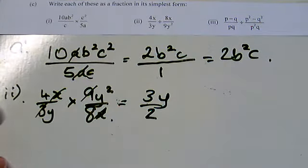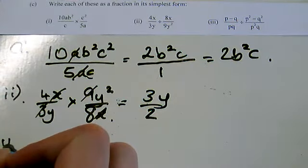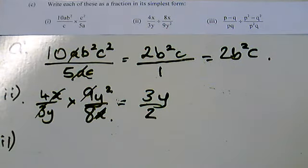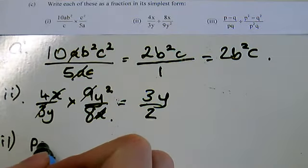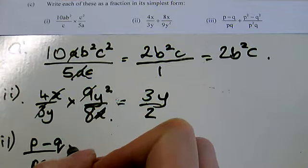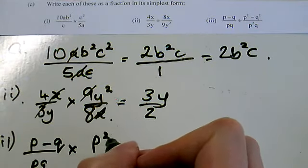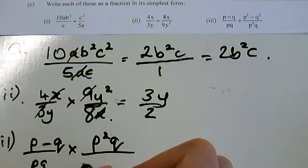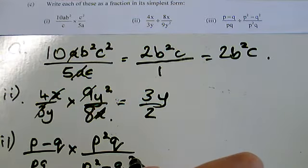And on to part 3. Again, we're going to flip the second fraction and multiply, so that gives you p minus q over pq. Now we're multiplying by p squared over q, p squared minus q squared.